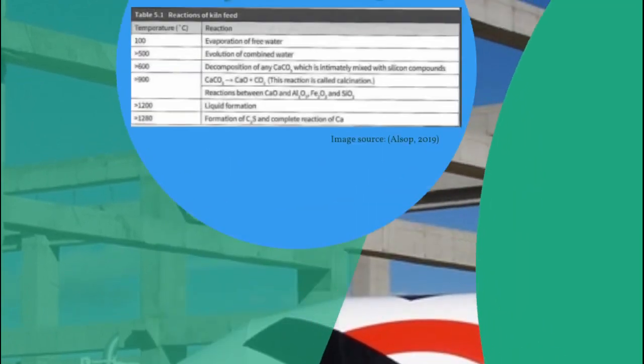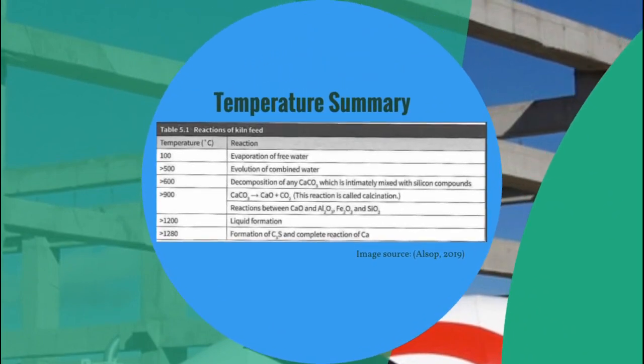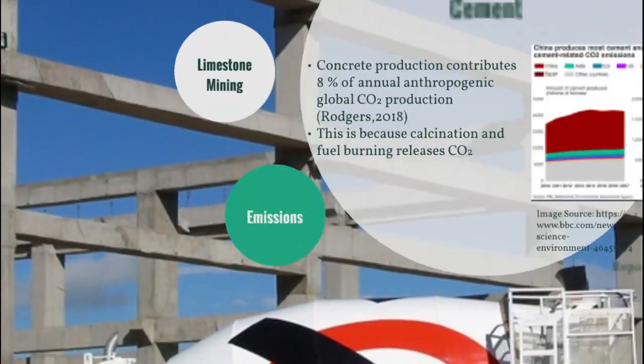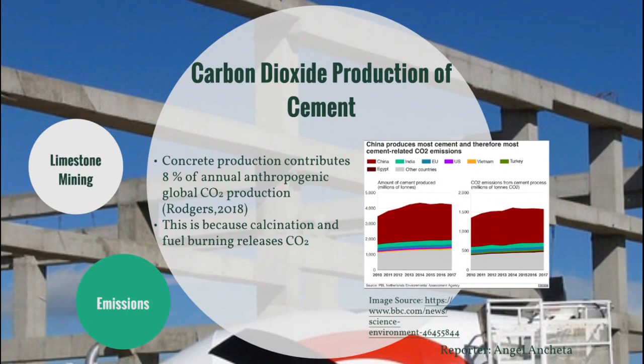The Cement Plant Operations Handbook for Dry Process Plants by Alsop (2019) also provides a table for the temperatures needed and the reactions in a kiln. Although cement is a useful material, it also poses several hazards to us and the environment. The carbon dioxide production of cement contributes about 8% of annual anthropogenic global CO2 production, because calcination and fuel burning both release carbon dioxide.